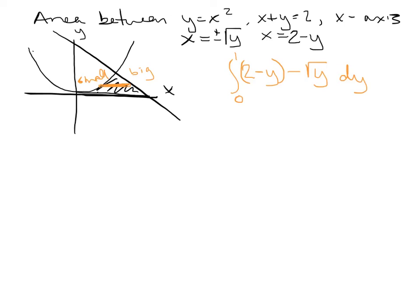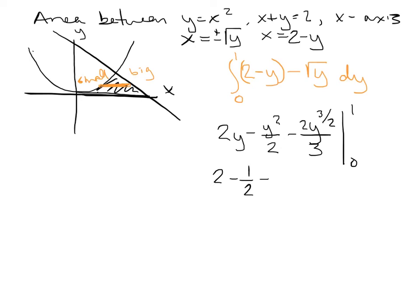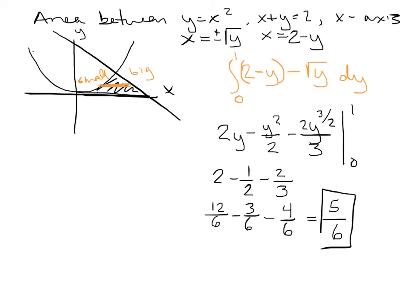Integrating (2 minus y) minus square root of y with respect to y gives 2y minus y squared over 2 minus y to the three-halves times 2/3, evaluated from 0 to 1. Plugging in 1: 2 minus 1/2 minus 2/3. Using a common denominator of 6: 12/6 minus 3/6 minus 4/6 equals 5/6. We get the same answer as before.